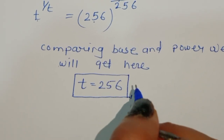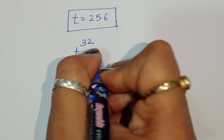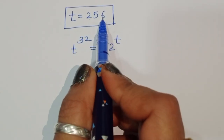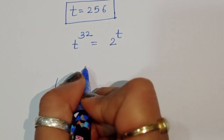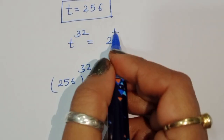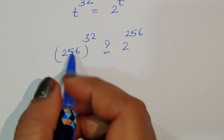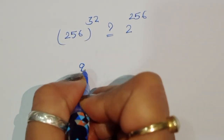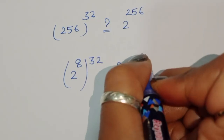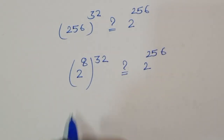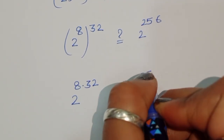Now let's verify whether this is correct. The question is t power 32 is equal to 2 power t. We substitute t equal to 256. So 256 power 32 should equal 2 power 256. We can write 256 as 2 power 8, so the left side becomes 2 power 8 raised to power 32.